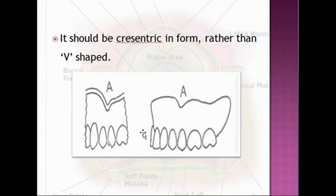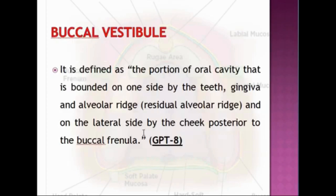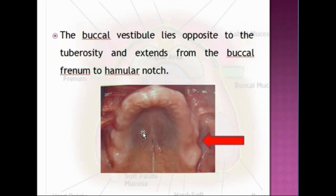The buccal vestibule is defined as the portion of the oral cavity bounded on one side by the teeth, gingiva, and alveolar ridge, and on the lateral side by the cheek, posterior to the buccal frenula. The buccal vestibule lies opposite to the tuberosity and extends from the buccal frenum to the hamular notch. Its size varies with contraction of the buccinator muscle, the position of the mandible, and the amount of bone loss from the maxilla.